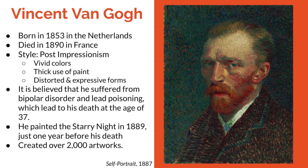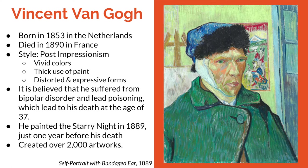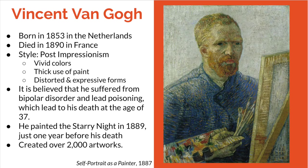His style was post-impressionism, which used vivid colors, thick use of paint, and distorted and expressive forms. He painted The Starry Night, which is one of his most famous paintings, in 1889, just one year before his death. Although he lived for a short amount of time, he was able to create over 2,000 artworks.